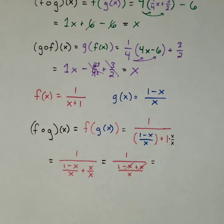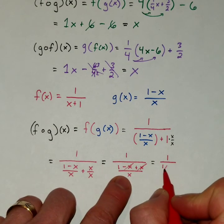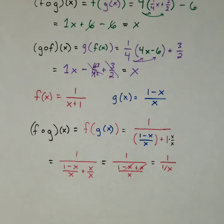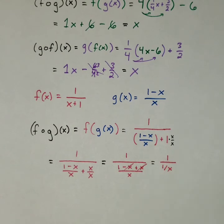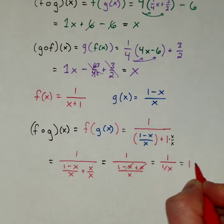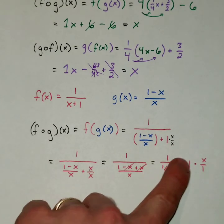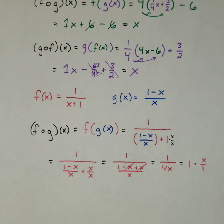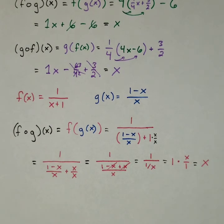What's nice here is the minus x plus x adds up to 0, and this simplifies nicely to 1 over 1 over x. Now if I do a copy-dot-flip — taking the top divided by the bottom is the same as the top times the reciprocal of the bottom — flip that bottom, and of course 1 times x over 1 is simply x. So there we have it: we have x as the result as well.